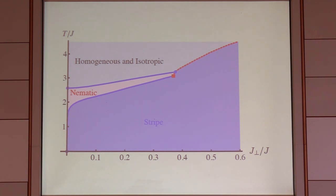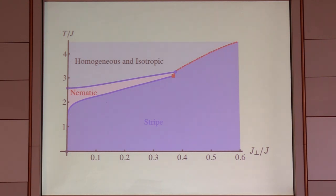Q: How did you cheat? A: We multiplied it by 10 — it's in the figure caption, but the figure just looked dumb otherwise. And I couldn't fit the word 'nematic' in.